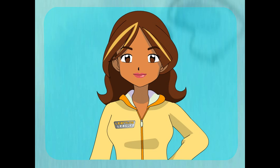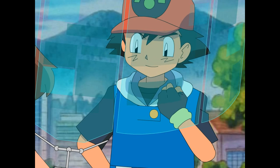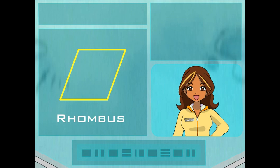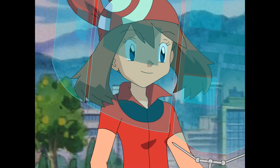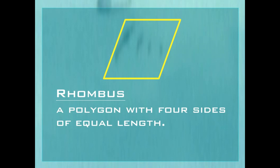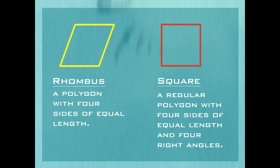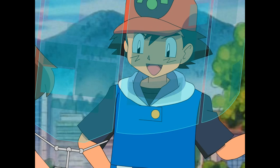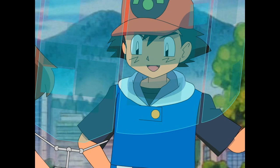Now remember your rhombus-shaped sign? That's a polygon too! Take a look — how many sides does it have? Four, just like a square! A rhombus is a four-sided polygon with all four sides of equal length. A square also has four sides of equal length, but squares are made up of all right angles. The opposite angles of a rhombus are equal, but a rhombus does not have to have four right angles. So a rhombus doesn't have to be a square, but a square is always a rhombus? You've got it!